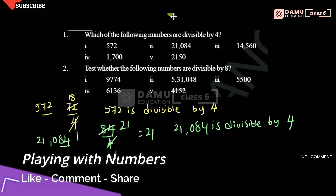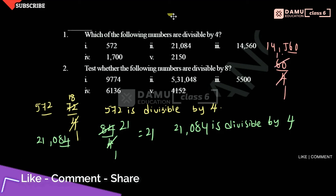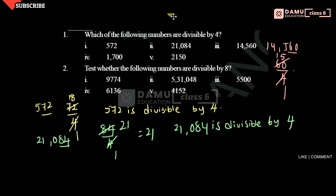The next one is 14,560. The last two digits are 60. Is 60 divisible by 4 or not? 4 times 15 is 60, so yes, it is divisible. Therefore, 14,560 is divisible by 4.